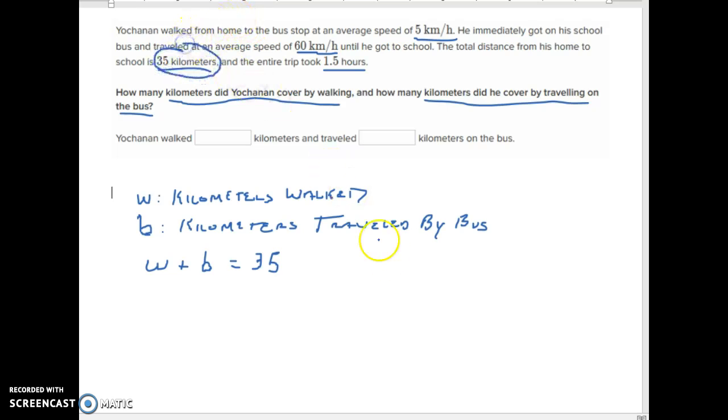The next piece is the tougher piece. We see that we have an equation that says the two trips combined were 1.5 hours, so we have to come up with two statements about walking and riding the bus in hours, and here's what's going to go on.